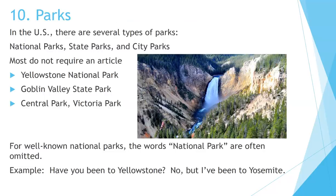Number 10: Parks. In the US, there are several types of parks: national parks, state parks, and city parks. Most do not require an article. Examples: Yellowstone National Park, Goblin Valley State Park, Central Park, Victoria Park. For well-known national parks, the words National Park are often omitted. For example, have you been to Yellowstone? No, but I've been to Yosemite.